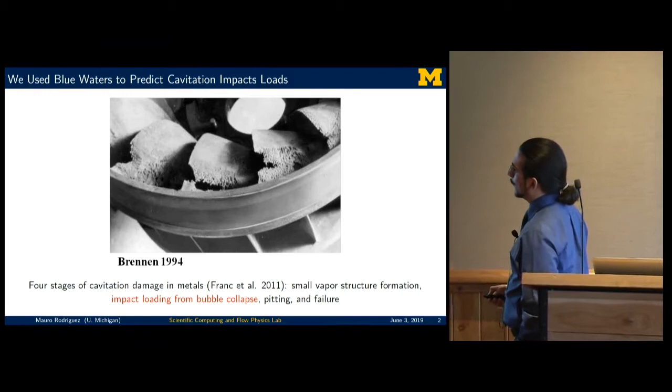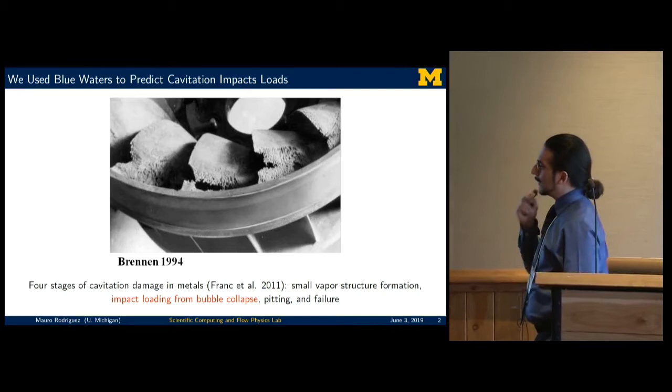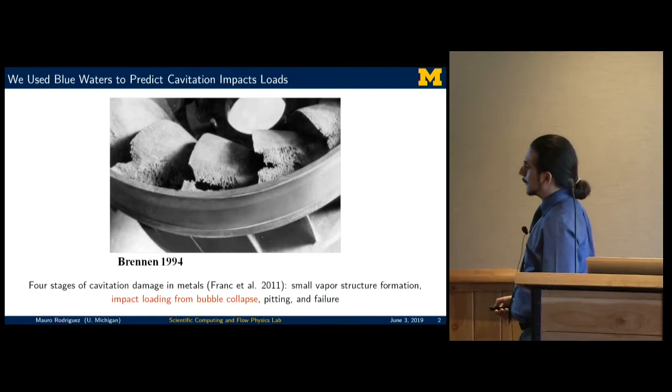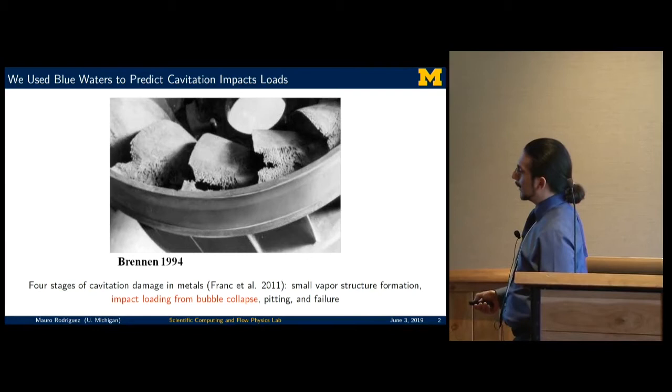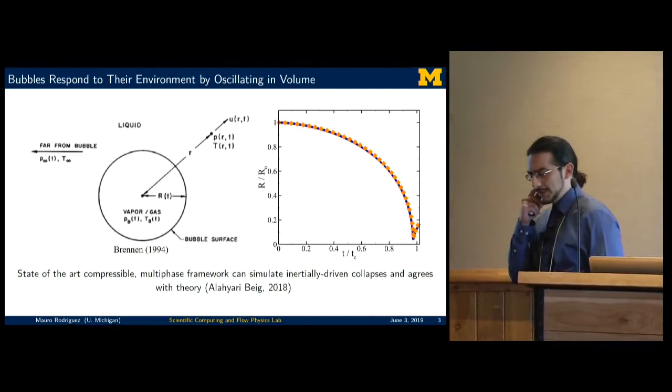You can see here a picture from Brennan 1994 of this water turbine, where the propeller blades have been effectively eaten away by the bubbles. There are four stages in which these cavitation events happen, specifically for metals: the small vapor structure formation, the bubble clouds as I showed in the previous slide, the impact loading from the bubble collapses, and then the pitting and ultimately the failure of the equipment. It is the second step here that's really hard to determine and predict, specifically because of the nonlinear behavior in which these bubbles collapse near solid objects.